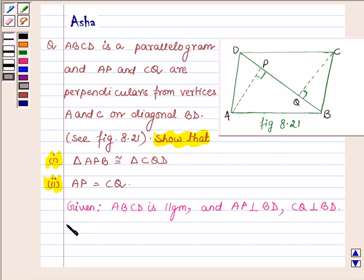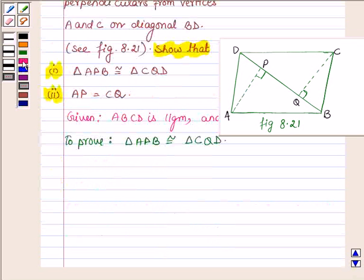Now we have to prove that triangle APB is congruent to triangle CQD. So let us try to prove it. First, let us consider triangles APB and CQD.